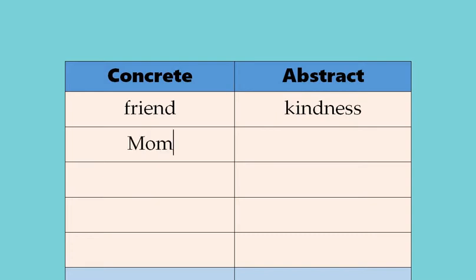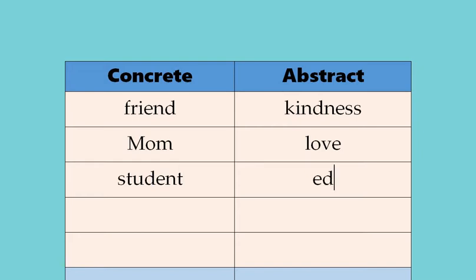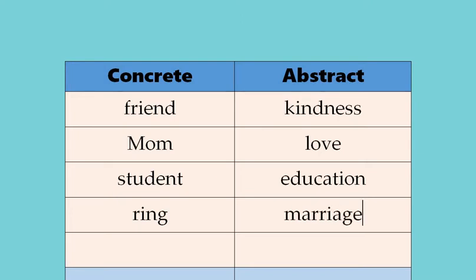Another concrete example might be student, and an abstract noun related to student would be education — you are getting an education through your learning. How about a ring, a type of jewelry? That could be related to marriage — marriage is an abstract noun. Let's try athlete: an abstract noun related to athlete might be speed. So based on this list, do you have any definition? Can you describe what a concrete noun is like or what an abstract noun is like?